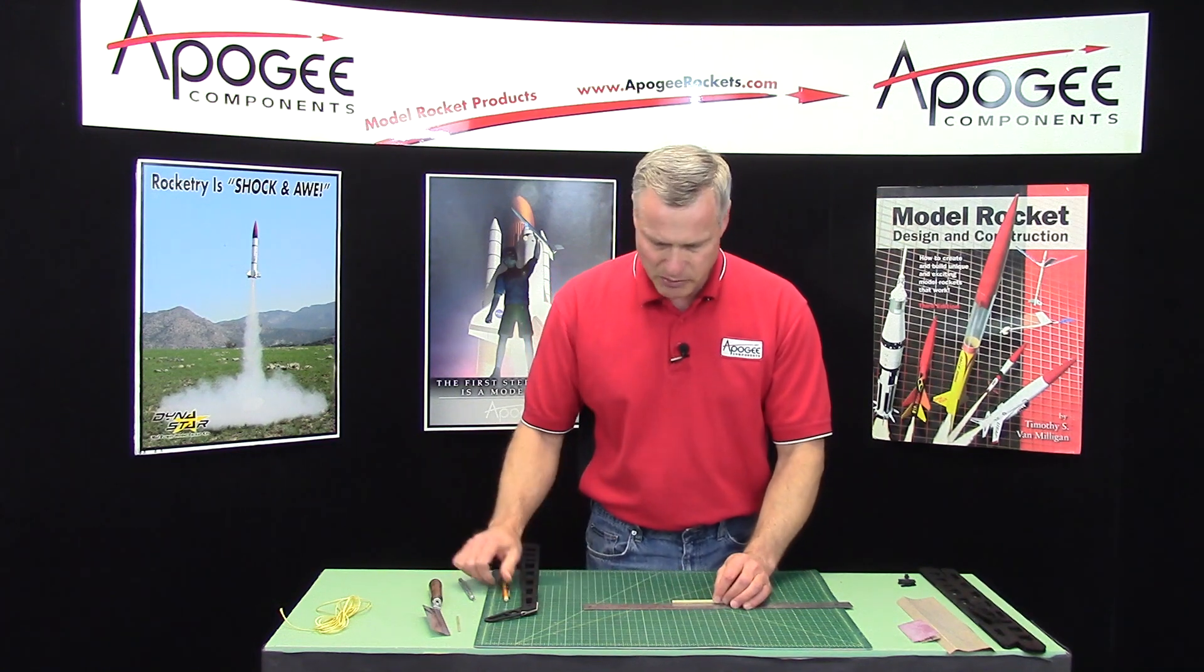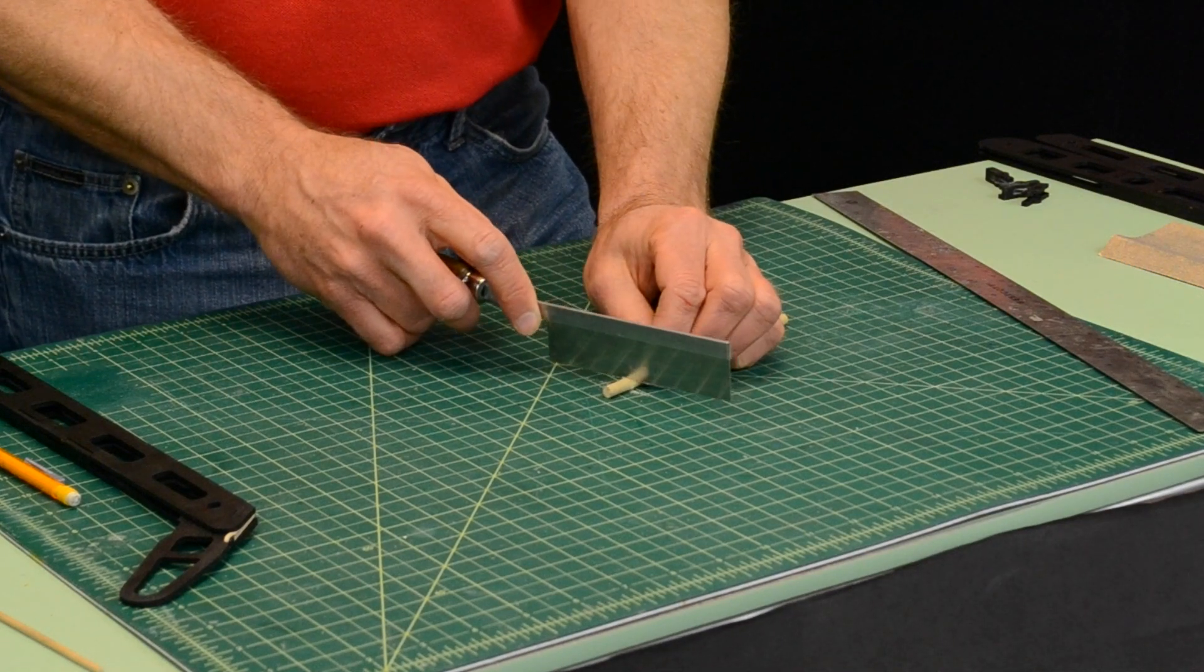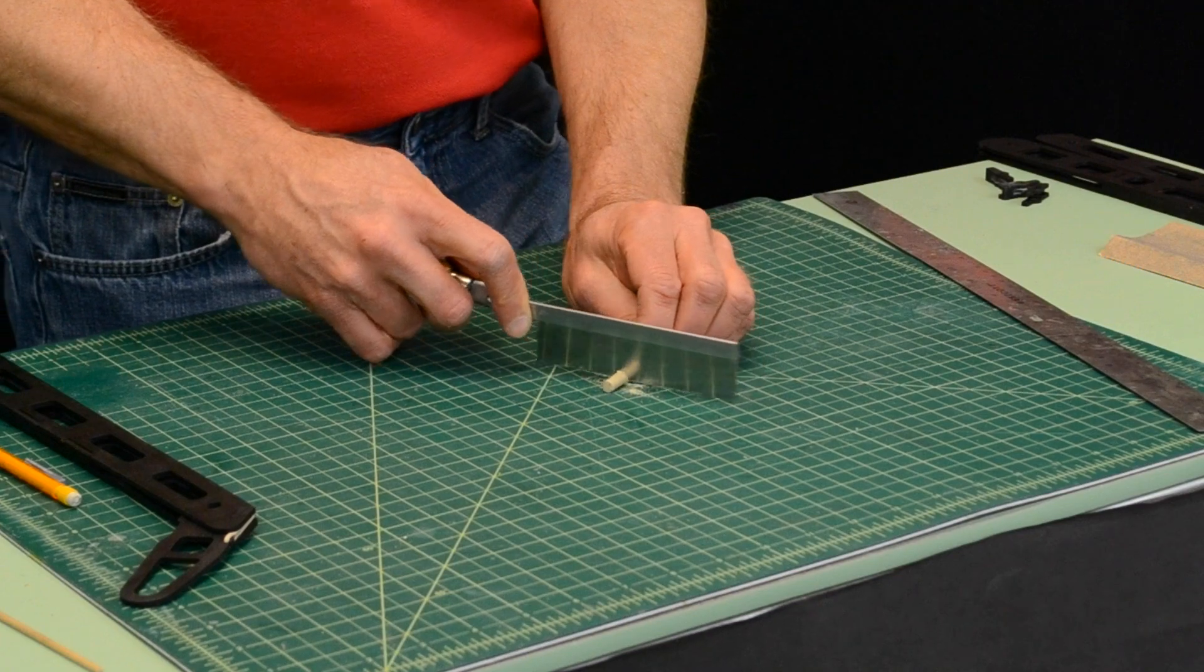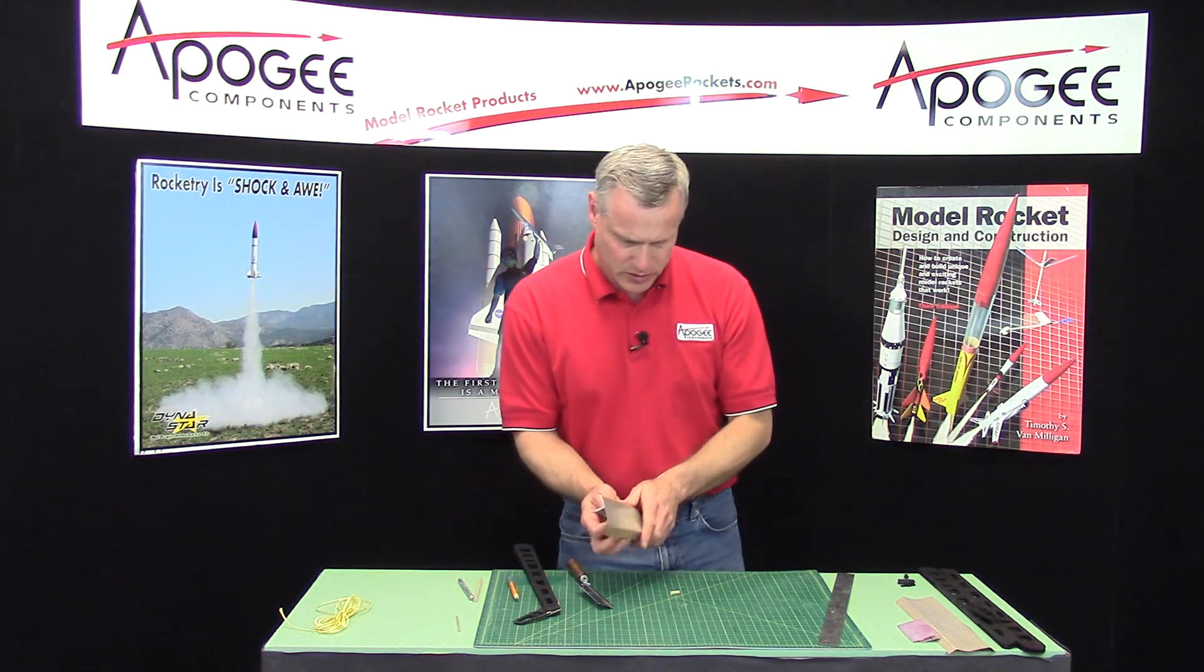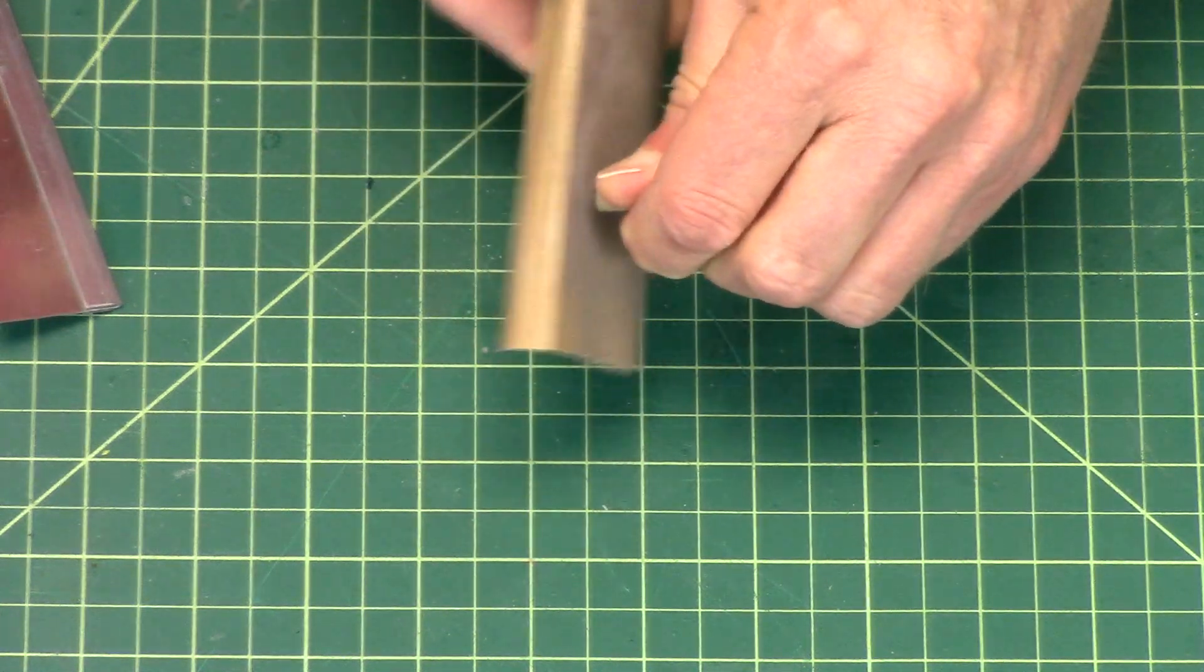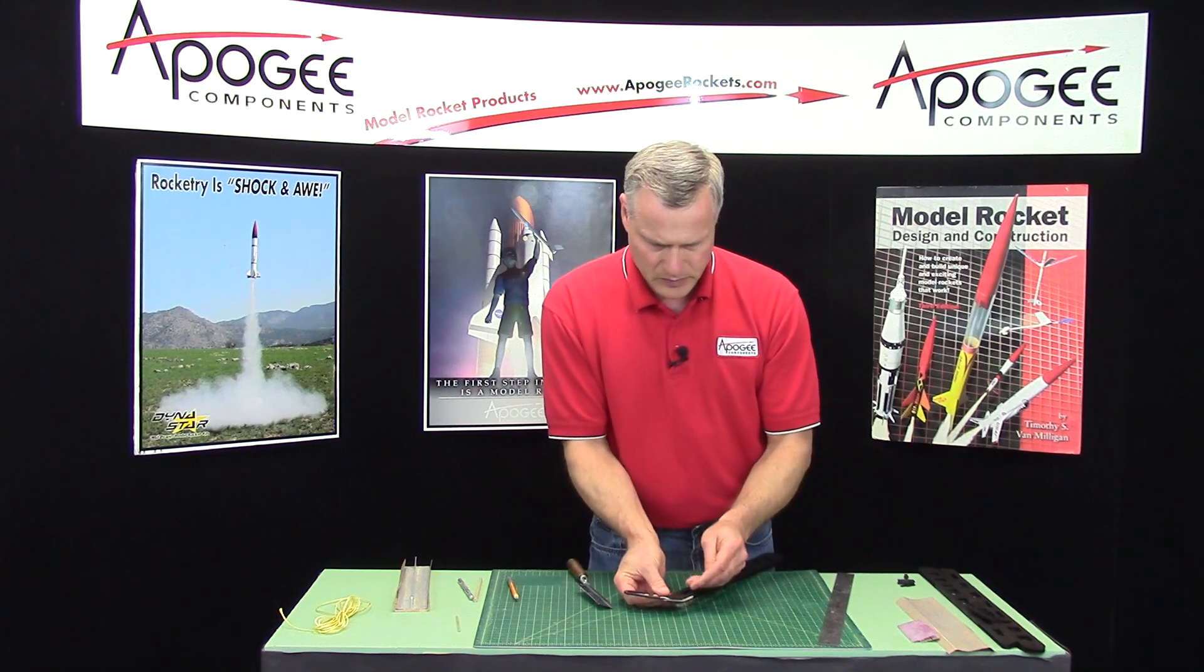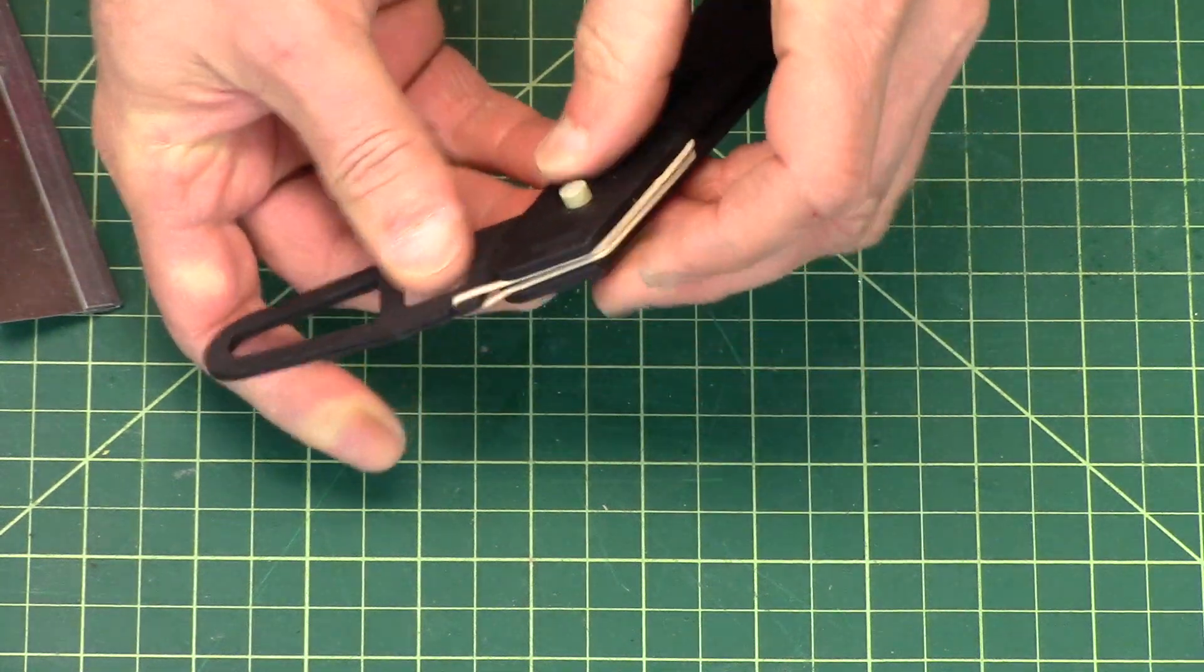So you can go ahead and cut them all at one time, but I'm just going to do one for right now. I'm using a razor saw, but you can also use a hobby knife. It just takes a little bit longer to cut through. Okay, where's my sanding block? You can clean up the edges. And if you kind of knock off the edges on one end, kind of round it off a little bit, it makes it a little easier to put it through the hole. Just like that.